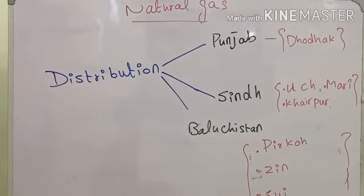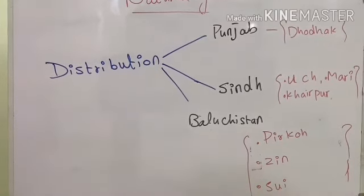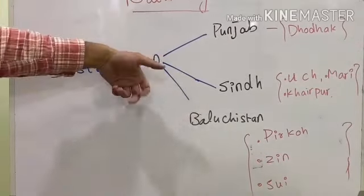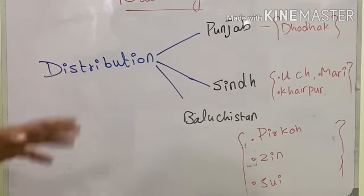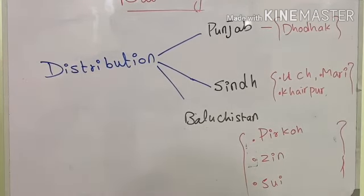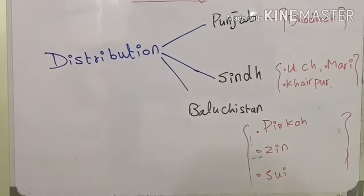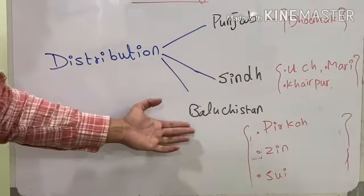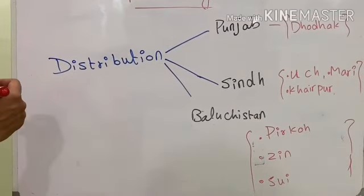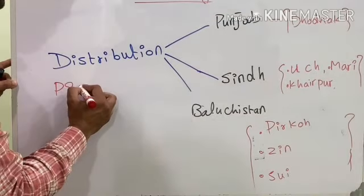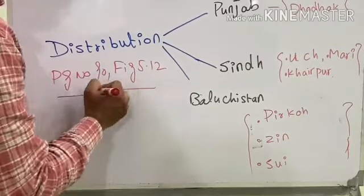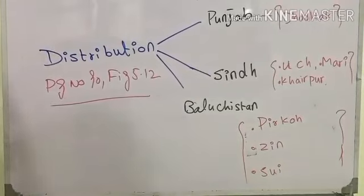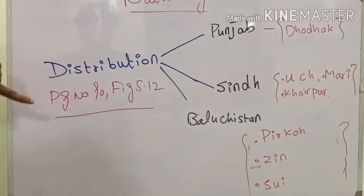Regarding the distribution of natural gas in Pakistan, it is found in three provinces. In Punjab, it is found in Dobrik. In Sindh, it is found in Uch (also known as Uch Sharif), Mari, and Haribo. In Balochistan, natural gas is found in Pirko, Zinn, and Sui. For further information, consult page number 90 and figure 5.12 from your book.